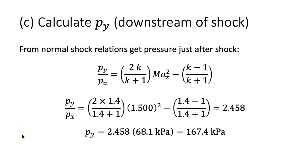For Part C, we calculate the pressure just downstream of the shock. From the normal shock relation for static pressure ratio, the known Mach number, and the pressure just before the shock, we calculate the pressure after the shock to be 167 kilopascals.